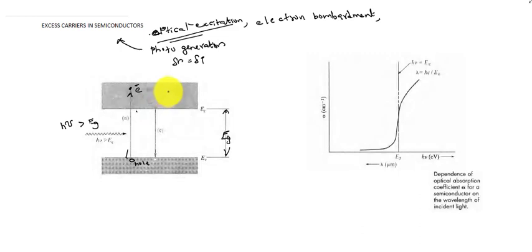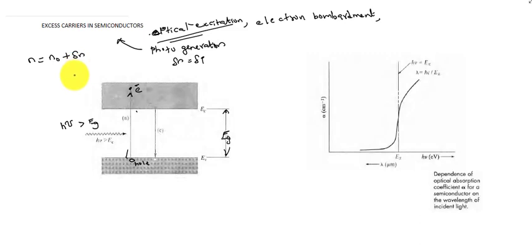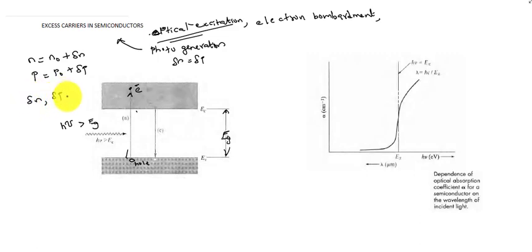This carrier concentration is in excess of the thermal equilibrium value. N0 is the thermal equilibrium electron concentration and delta N is the excess electrons created by optical absorption. Similarly for holes, P0 is the equilibrium value and delta P is the excess carriers generated. So delta N and delta P are the excess electron and hole concentrations.